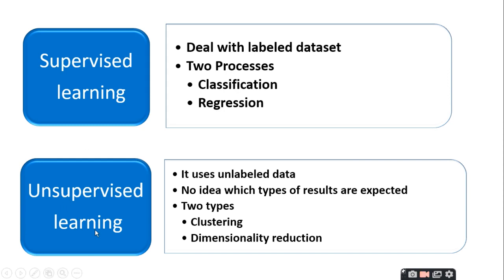Unsupervised learning uses unlabeled data — there is no idea what types of results are expected. There are two types of unsupervised learning: clustering and dimensionality reduction.